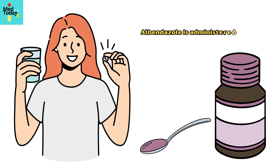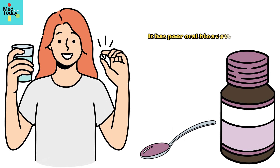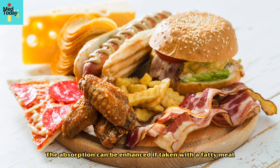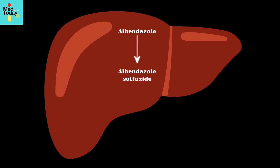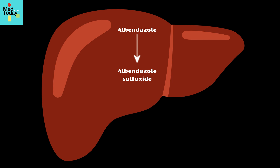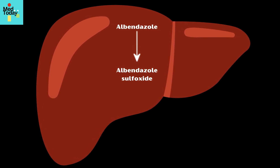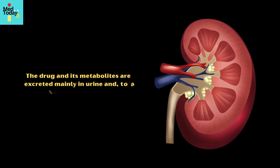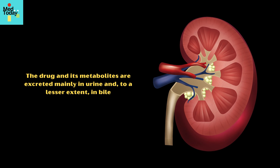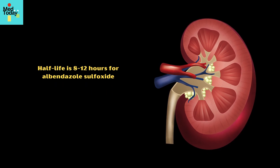Albendazole is administered orally as tablets or suspension. It has poor oral bioavailability; however, absorption can be enhanced if taken with a fatty meal. Albendazole is rapidly converted in the liver to its active metabolite, albendazole sulfoxide, which is responsible for most of its therapeutic effects. The drug and its metabolites are excreted mainly in urine and, to a lesser extent, in bile. The half-life is 8 to 12 hours for albendazole sulfoxide.